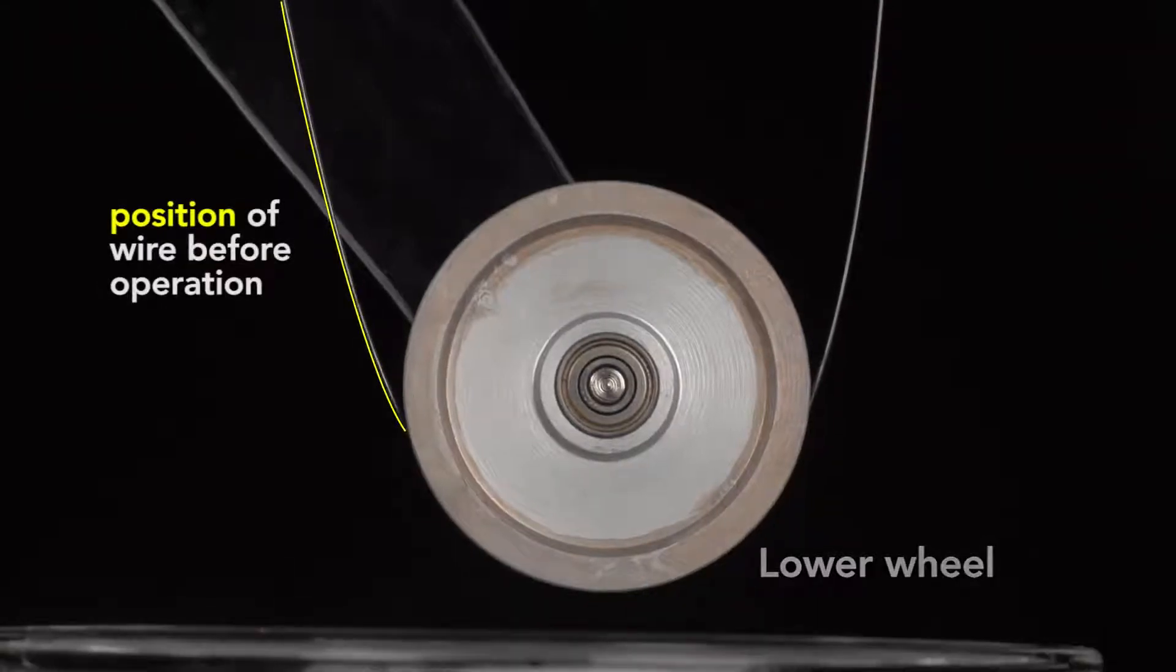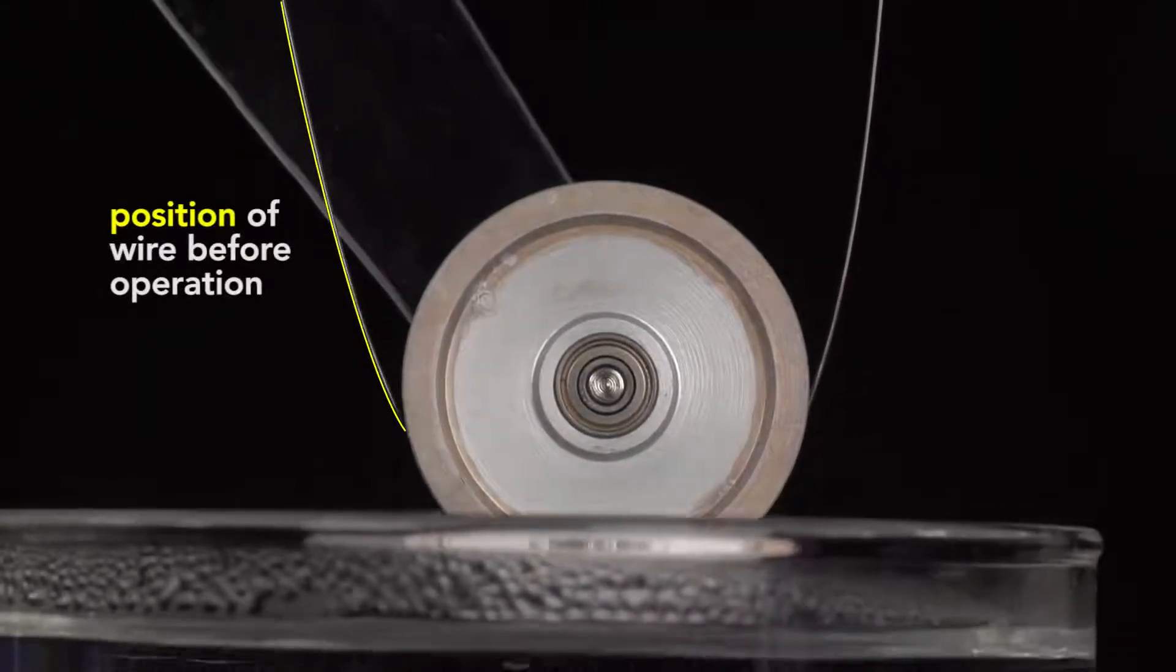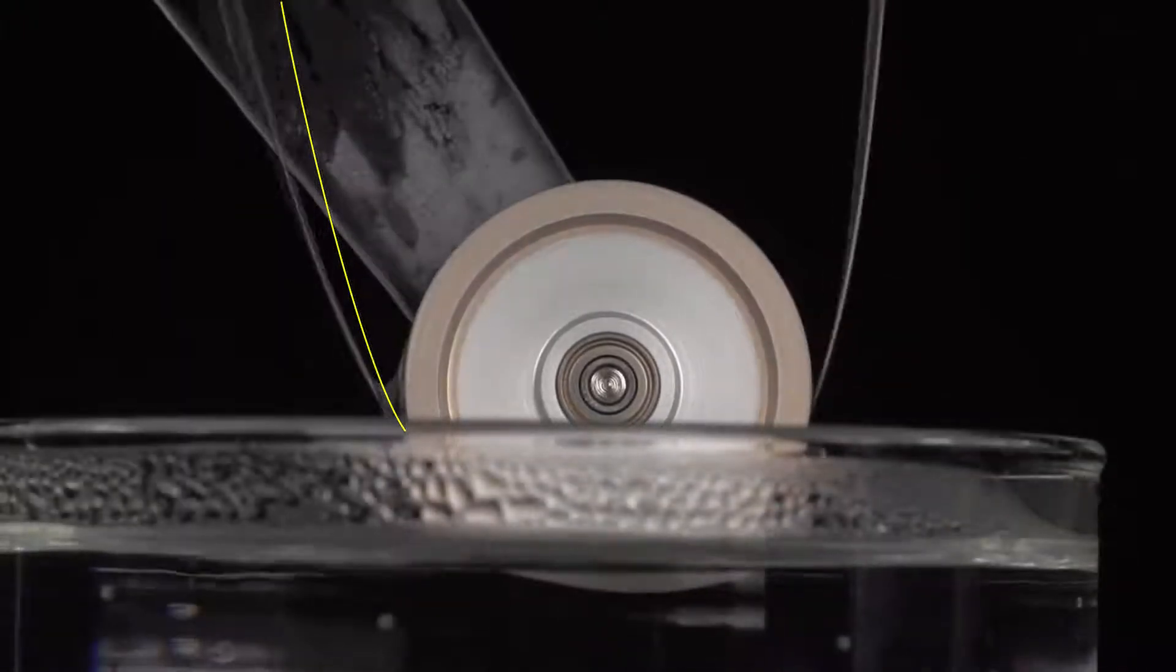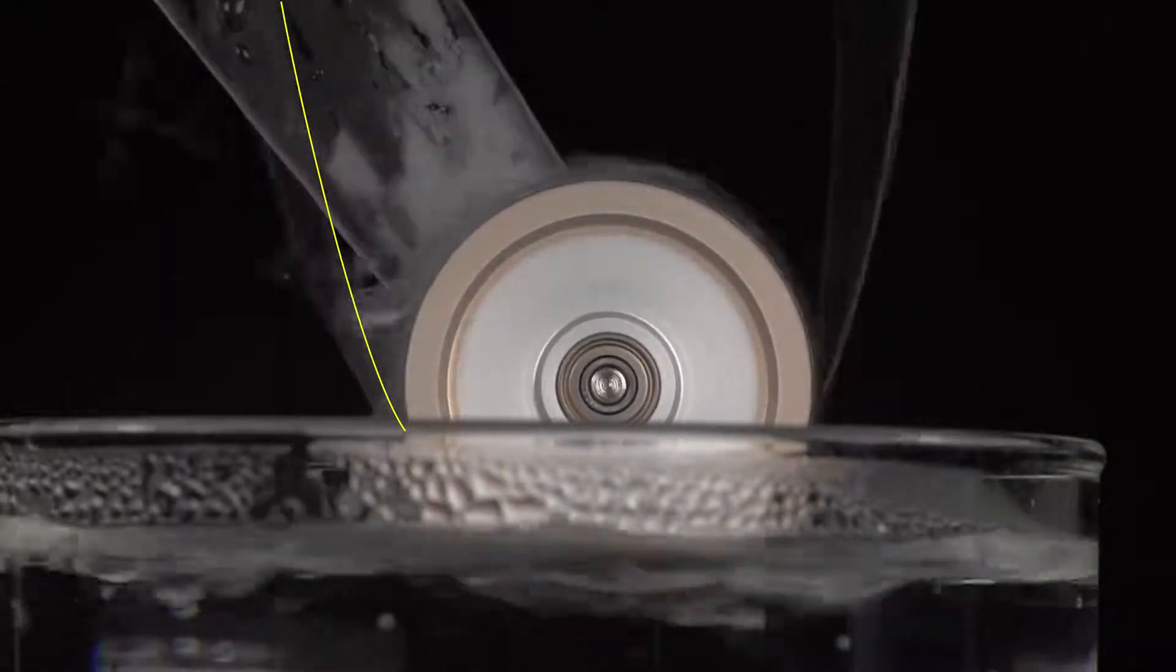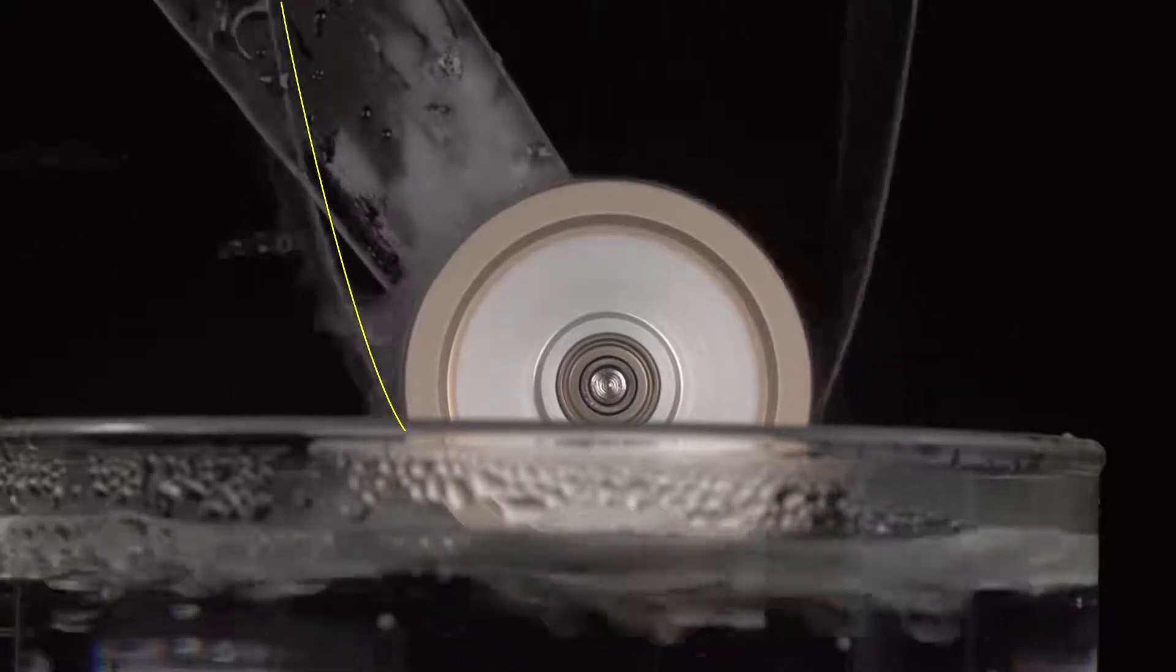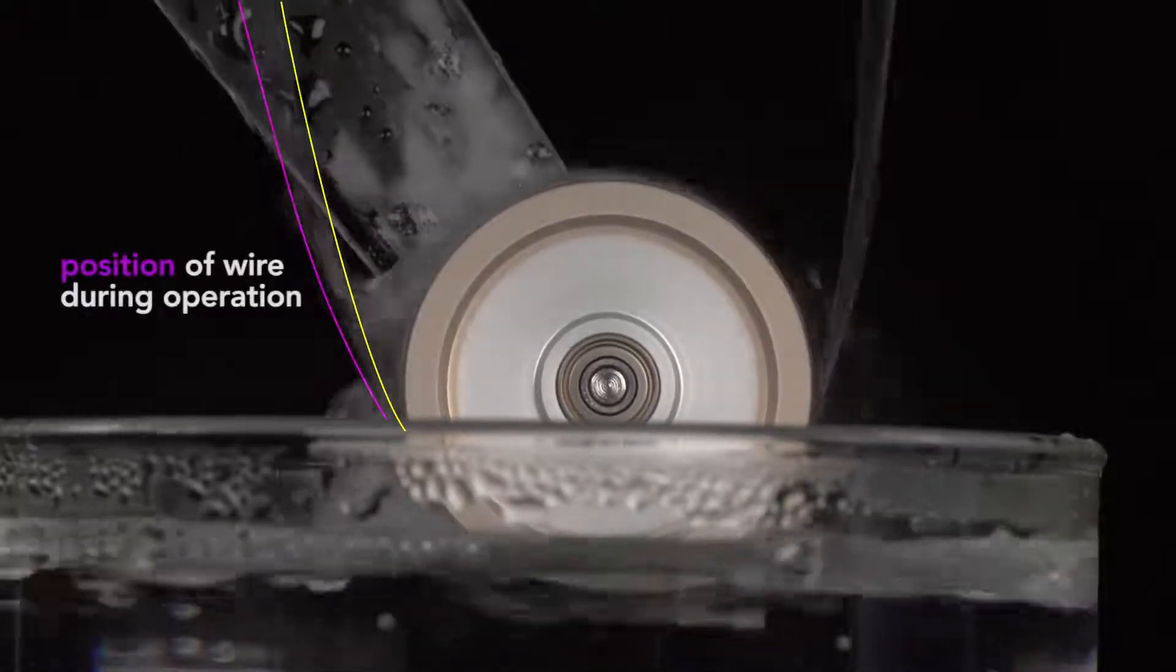I'll mark the position of the wire on the left with a yellow line. Then, when I start the wheel, the wire's distance from the initial position is much greater. It's hard to see, so I'll mark its position with a purple line.